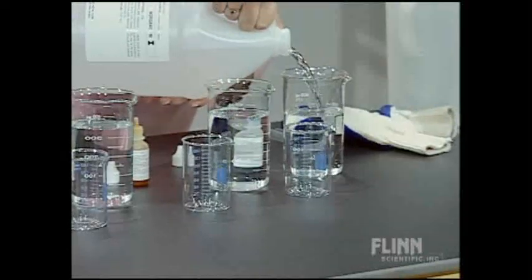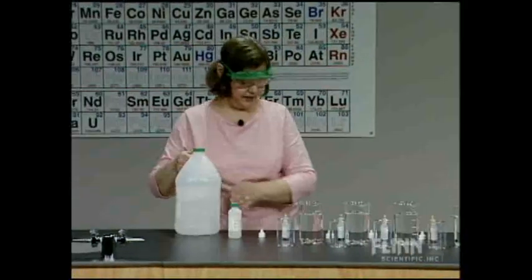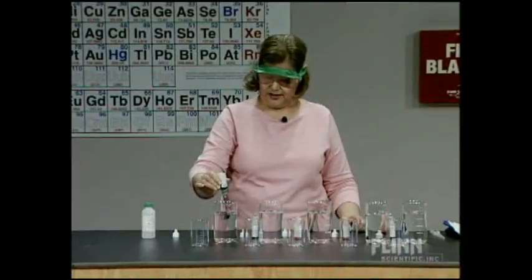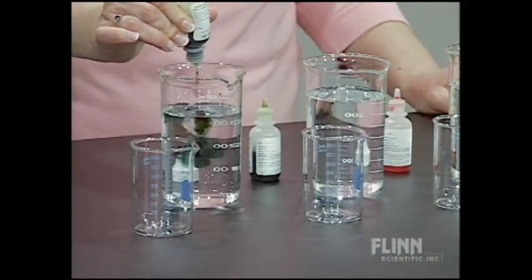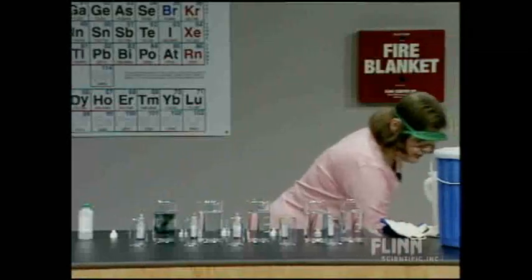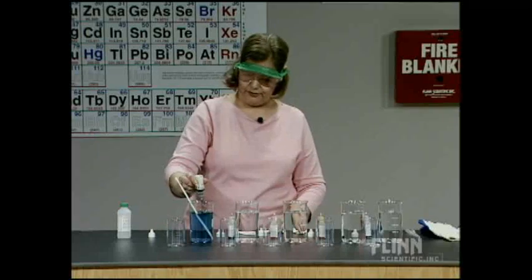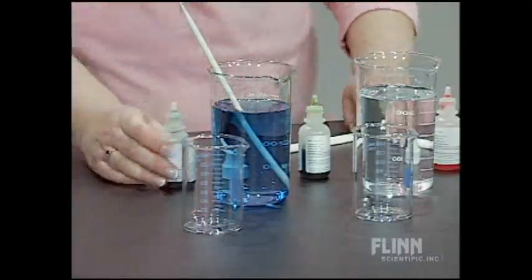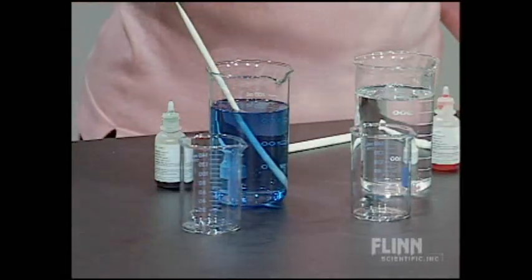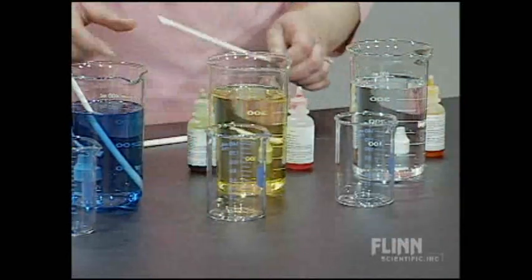What I'm going to do next is add different acid-base indicators to them. In the first one here, I have bromocresol green. I just want to add enough to get a nice, deep, hopefully blue color. Bromocresol green is blue in basic solution when the pH is greater than about 5.4. All that we really know at this point is that the pH is greater than 5.4.